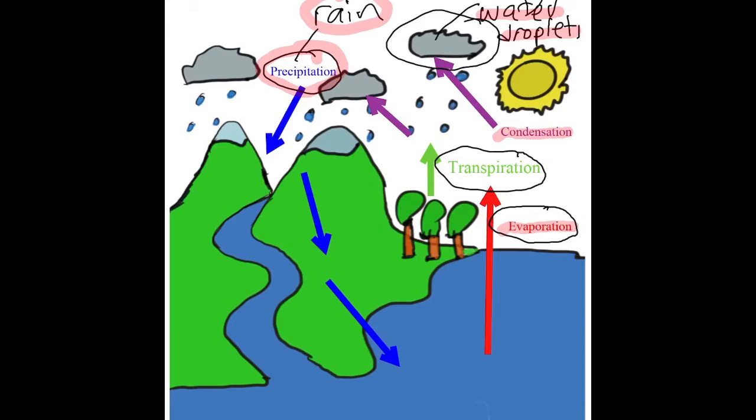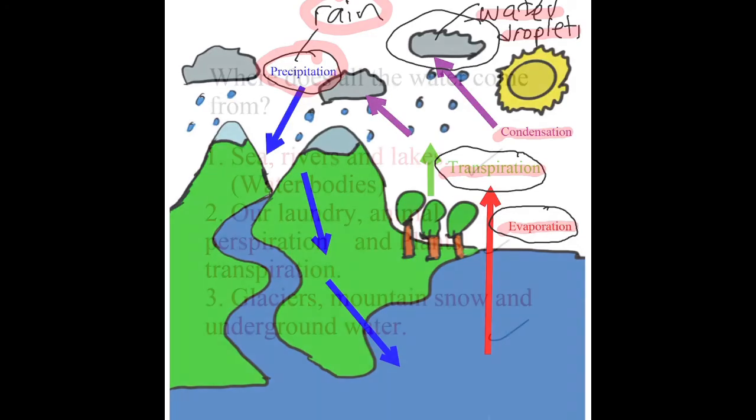Now this word here, transpiration. What is it? It's actually the plants giving out water from their stomata. Plants don't perspire, they transpire when they breathe.